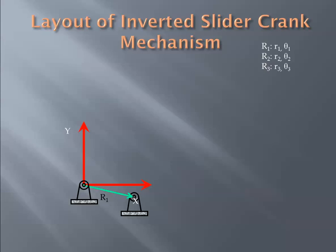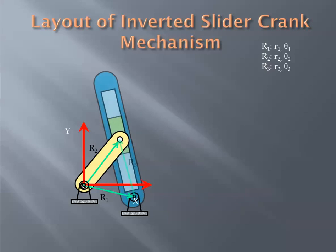I can lay out vector r2 and along with it I can lay out the crank. Then I can lay out vector r3 and along with it I can lay out the output link. I can also lay out the block and place the pin which is on the block at the tip of vector r3.